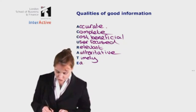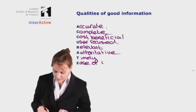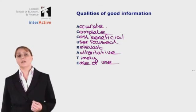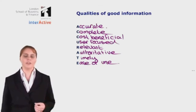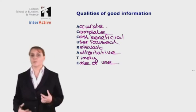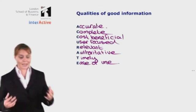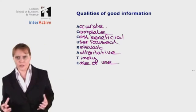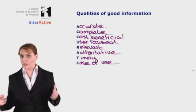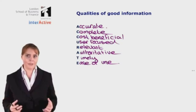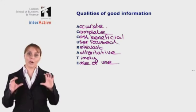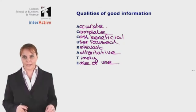Finally, good information should have ease of use. What we're looking at here is the format and the language in which the information is being provided. We might provide excellent, accurate, complete, user-focused information, but if it's written in a foreign language which management aren't going to be able to understand, it is utterly useless. And those are the qualities of good information.